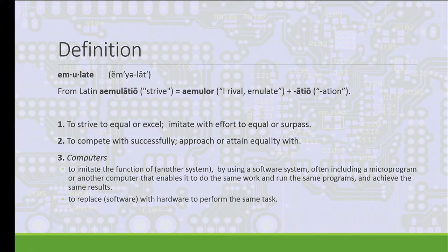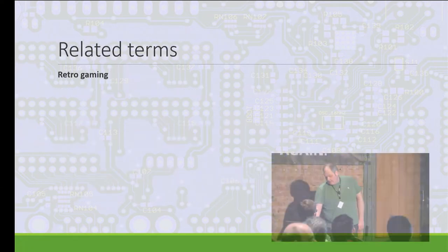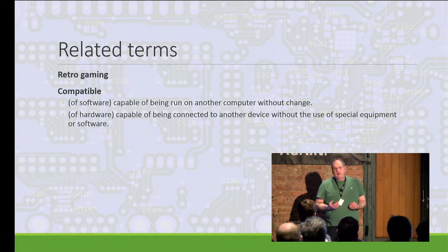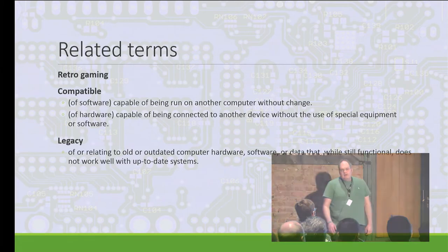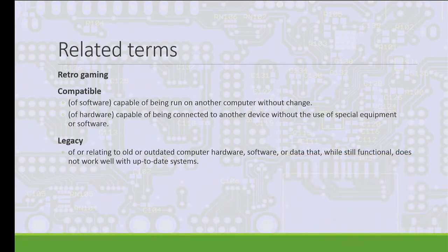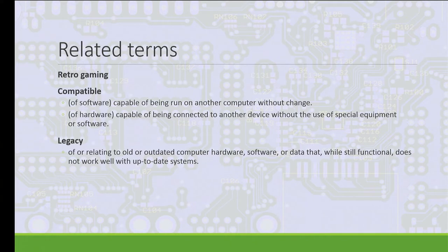In computing, emulation is generally one system being able to use the software or hardware of another, implying being at least equal with it. Related terms include compatibility - broadly defined as being able to run software or use hardware from another computer without needing it to be changed. Legacy refers to things that become obsolete but are still usable, like PS2 keyboards when you've got USB. For me, reverse engineering is the main thing about emulation - the fun of discovering and understanding a system.